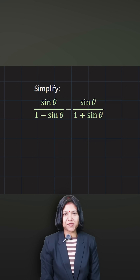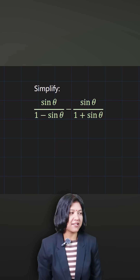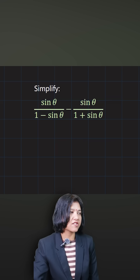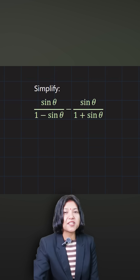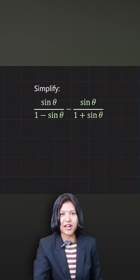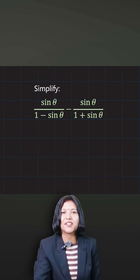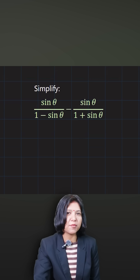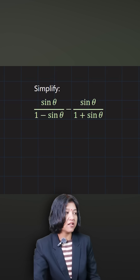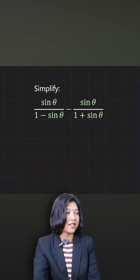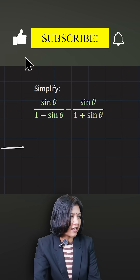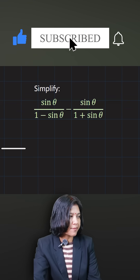You have to simplify this trigonometric fraction. You have two fractions here. The first thing that should come to your mind when you see a fraction is to make the denominator common — only then can you subtract or add the fractions. This problem is about subtracting.